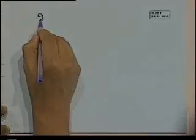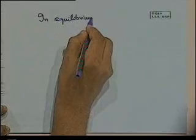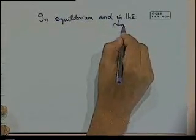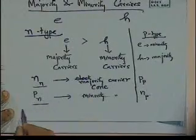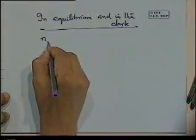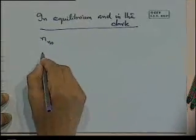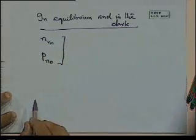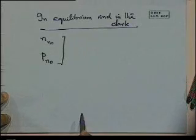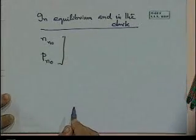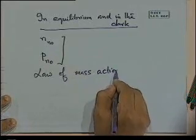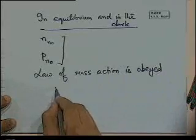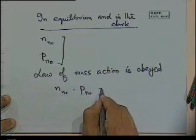In equilibrium and in the dark, we use the notation n_n0 and p_n0 to indicate the equilibrium majority and minority carrier concentrations. Under these conditions, the law of mass action is obeyed: n_n0 times p_n0 equals n_i squared.